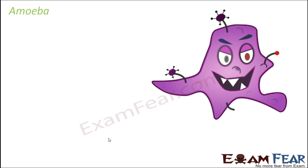Amoeba is a unicellular animal — just one cell makes it all. In human beings we have thousands and thousands of cells inside our body, but in amoeba just one cell does all the job: it helps in eating food, it helps in excreting out waste products, and it helps in moving from one place to another. Everything is done by just one cell.